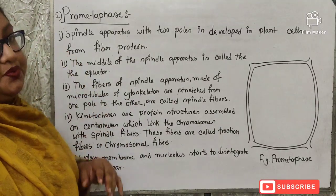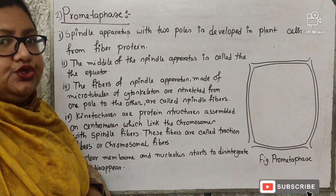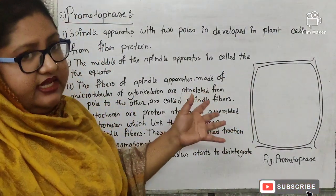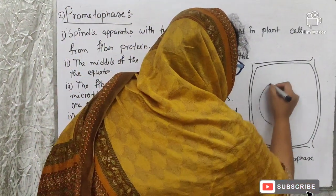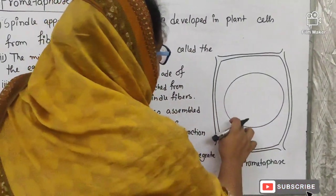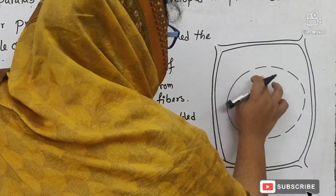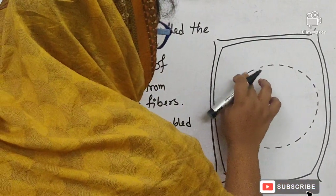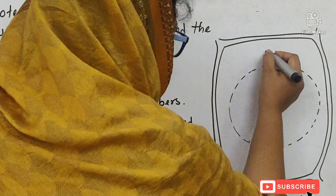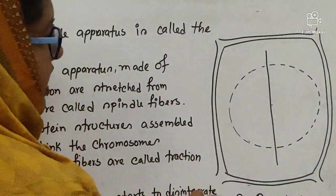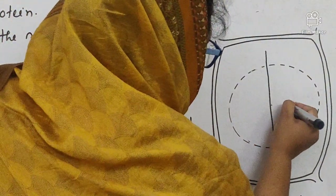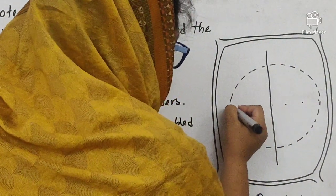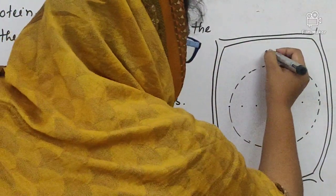Prometaphase: draw a rectangular shape as before. Draw a circle for the nucleus and erase some portions to show the nuclear membrane disappearing. Draw a single line through the center and place three dots on both sides to represent the spindle apparatus. Draw chromosomes leaving one spindle fiber, then drawing a chromosome on the next, alternating. Label: pole, disappearing nuclear membrane, nucleolus, and chromosome.